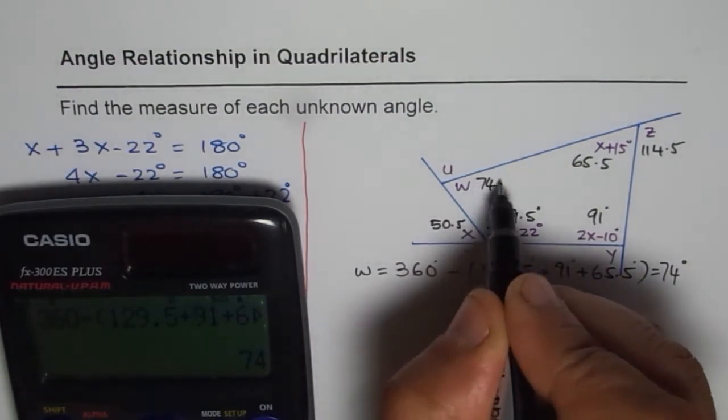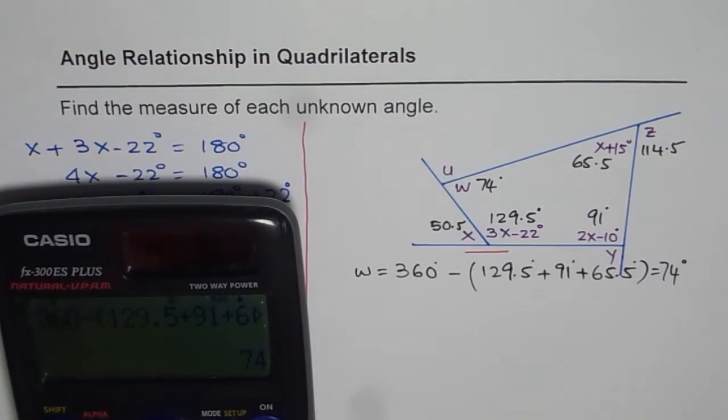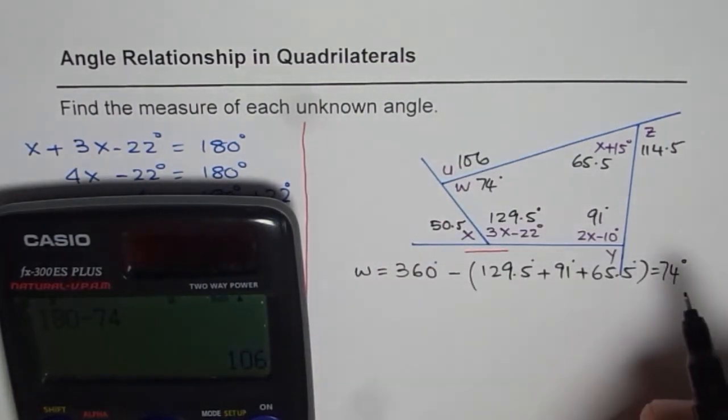So we get W as 74 degrees. So we get this as 74 degrees. So you can find all other angles. U will be what? 180 minus 74. So 106 degrees. Perfect.